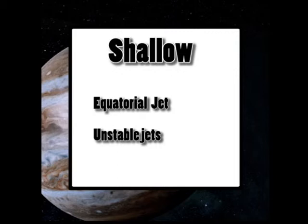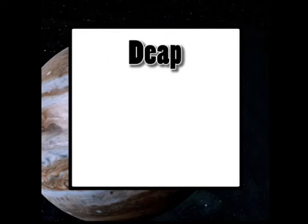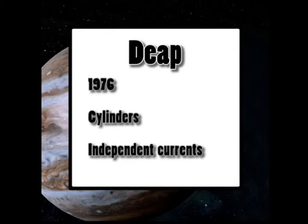So the second model is called the deep model, and it was created in 1976. It describes that Jupiter's winds are caused from liquid in its atmosphere, or below its atmosphere, basically causing pressure changes. These changes would then affect cylinders that are around Jupiter's atmosphere. These cylinders then allow the gases from the lower levels of Jupiter's atmosphere to circulate to the higher levels of Jupiter's atmosphere and vice versa, in turn causing winds.